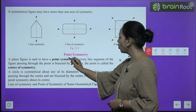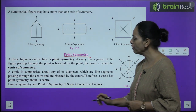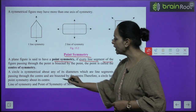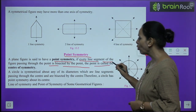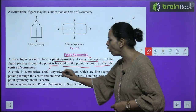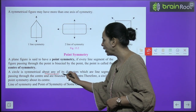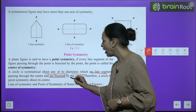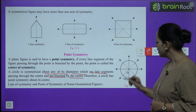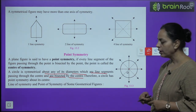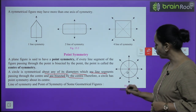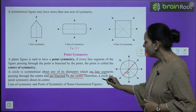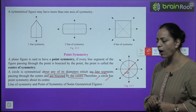Now we are talking about point symmetry. A plane figure is said to have point symmetry if every line segment of the figure passing through the point is bisected by that point. This point is called the centre of symmetry. A circle is symmetrical about any of its diameters, which pass through and are bisected by the centre. The centre point of a circle is the point of symmetry.